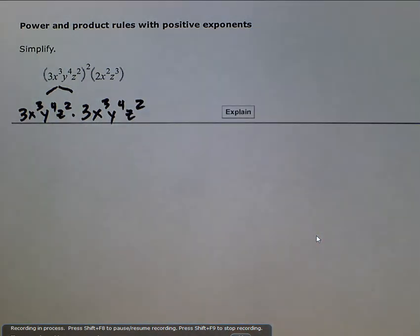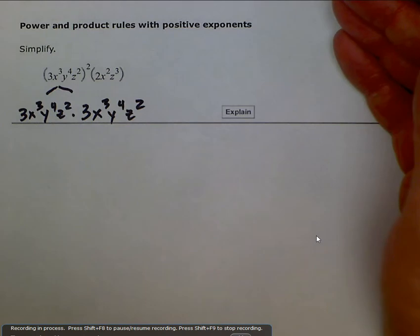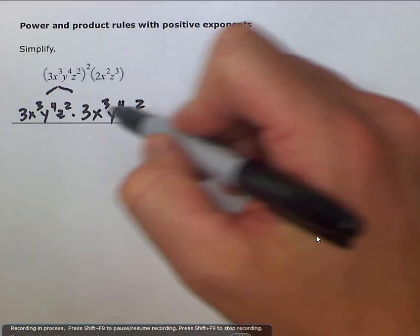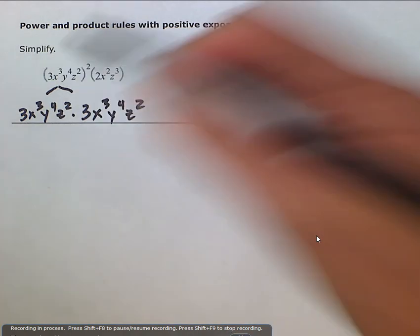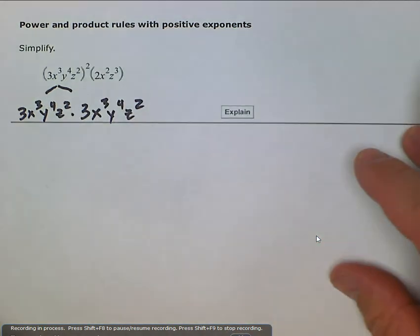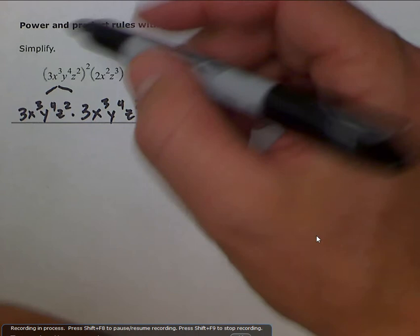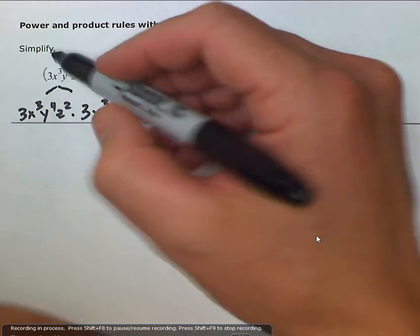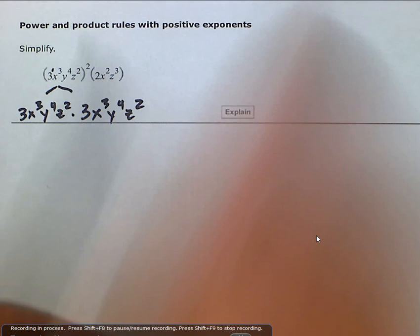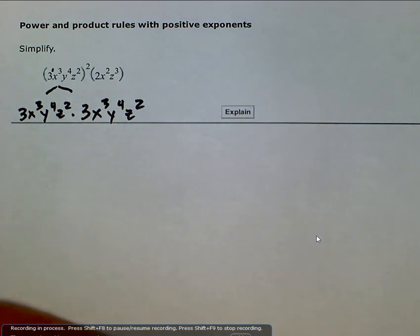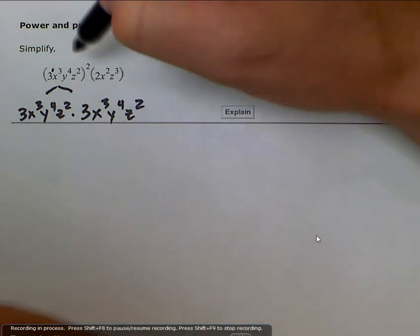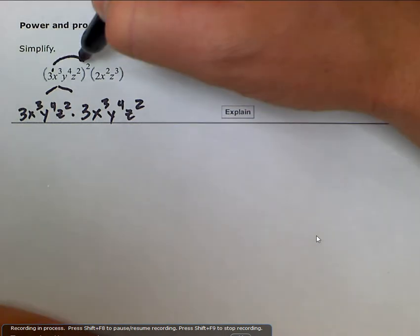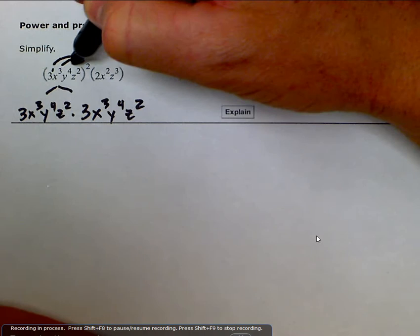So the power to power rule can simplify it. And instead of having to go through all this, we just distribute that exponent of two to all the exponents on the inside. Remember, if it doesn't show an exponent, such as this three, it's an implied exponent of one because there is one three. So with the power to power rule, we would distribute this two to the one, to the three, to the four, and to the two.